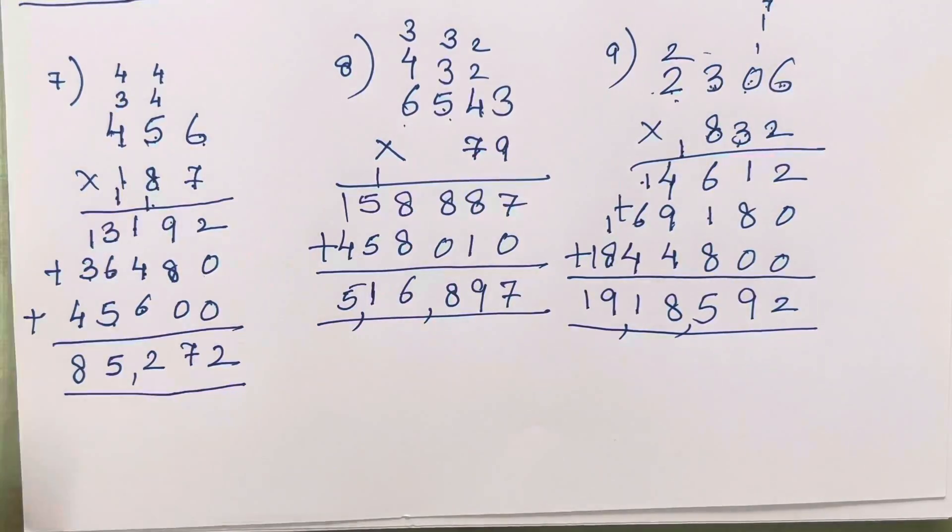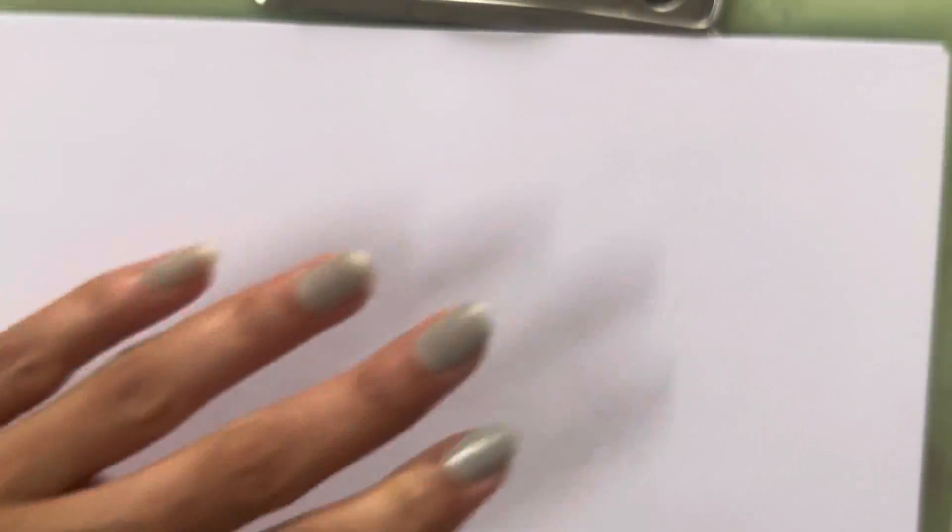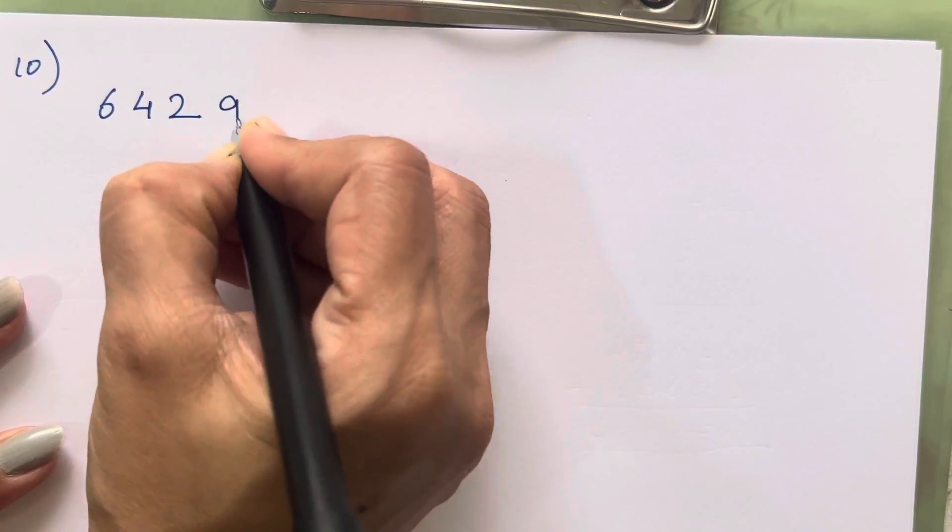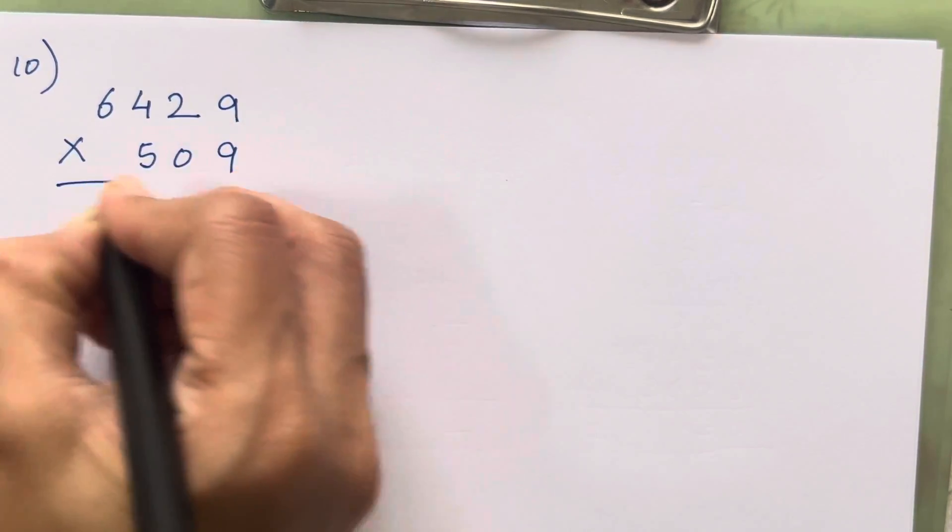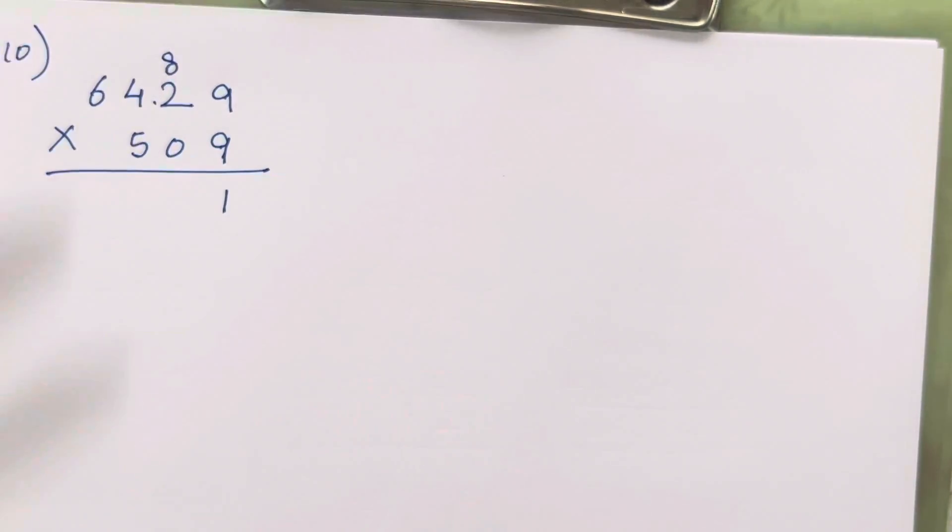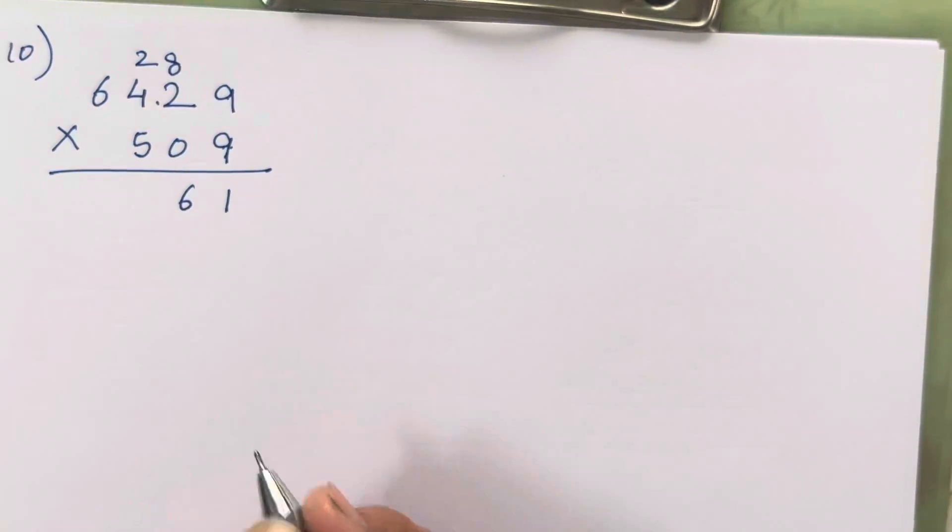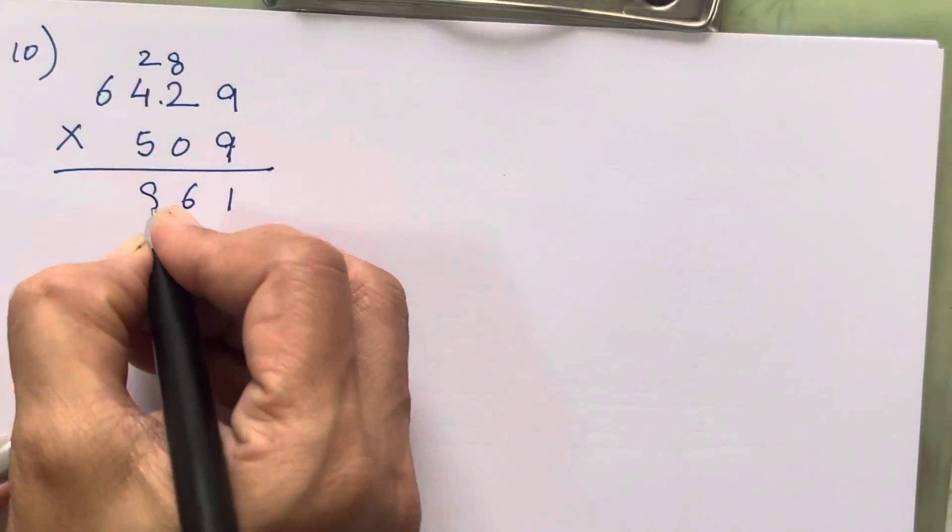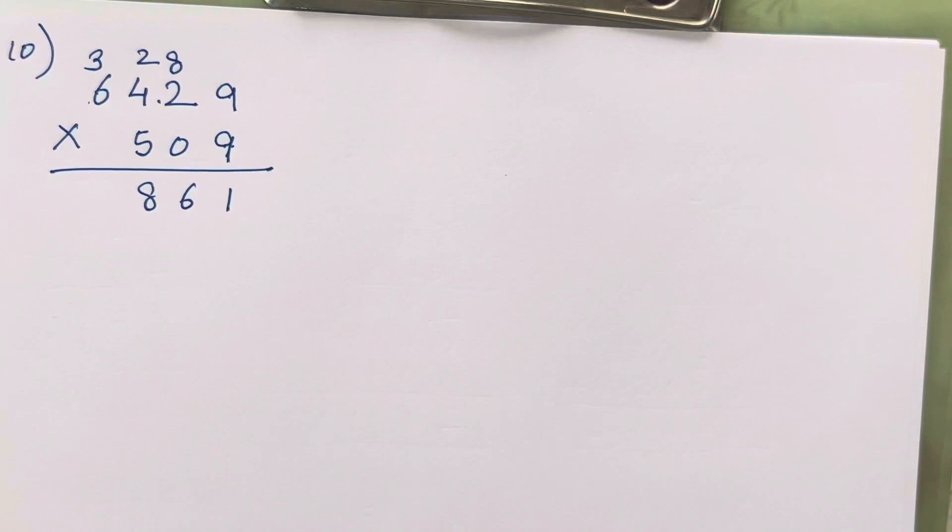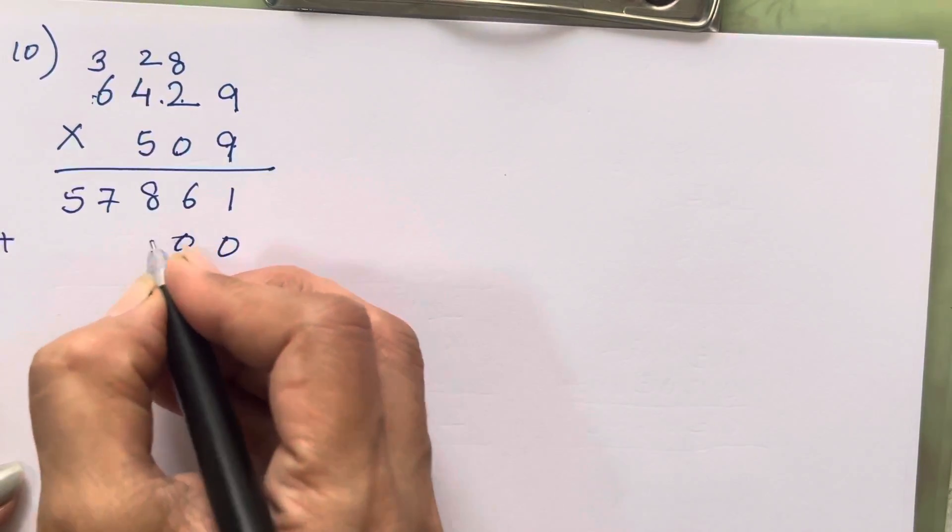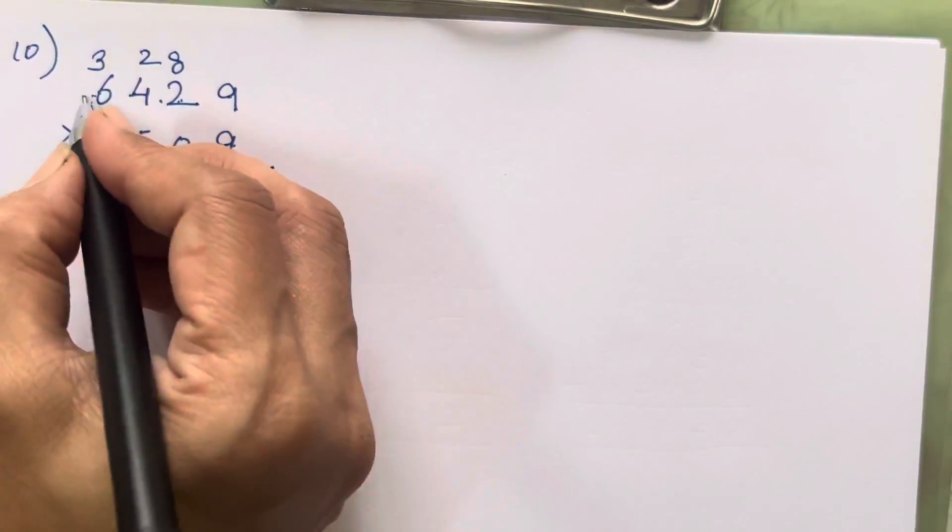Now remaining 3 sums, last 3 sums from this question. This is a very lengthy exercise. Why they have given such a lengthy exercise children you should also understand, so that it will be practiced properly. That is why it is so lengthy. So 3229 into 6429 into 509. 9 nines are 81, 9 twos are 18, 19, 20, 21, 22, 23, 24, 25, 26. 4 nines are 36, 37, 38. 6 nines are 54, 55, 56, 57.